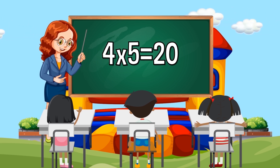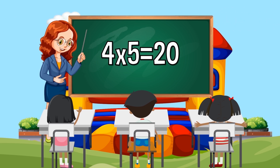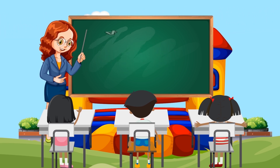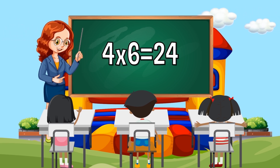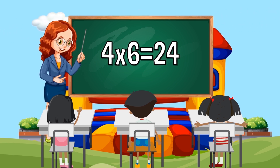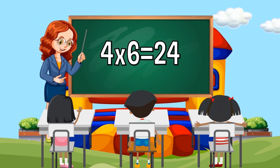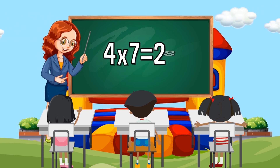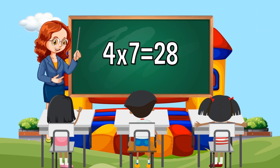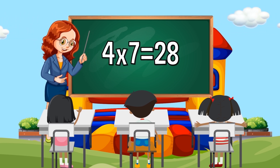Four times five equals twenty. Four times six equals twenty-four. Four times seven equals twenty-eight.